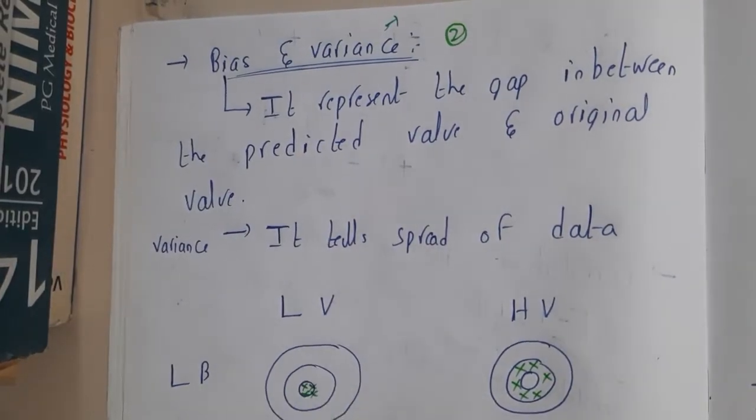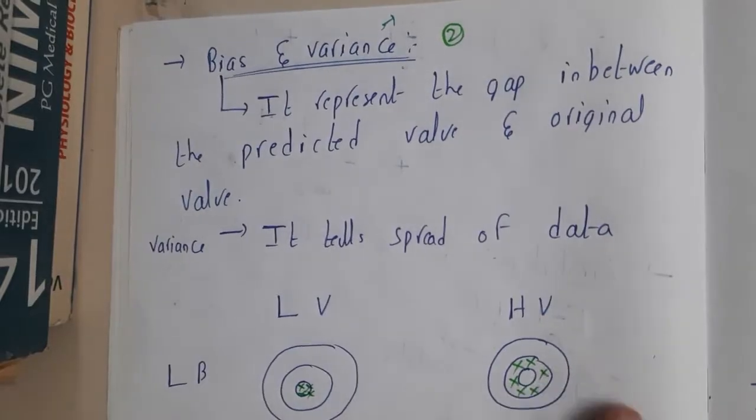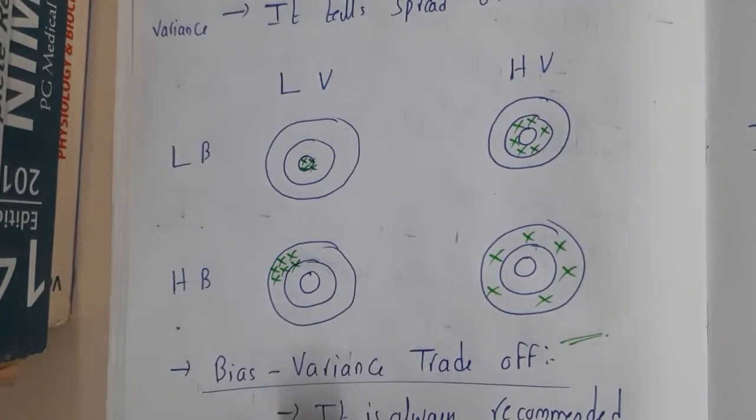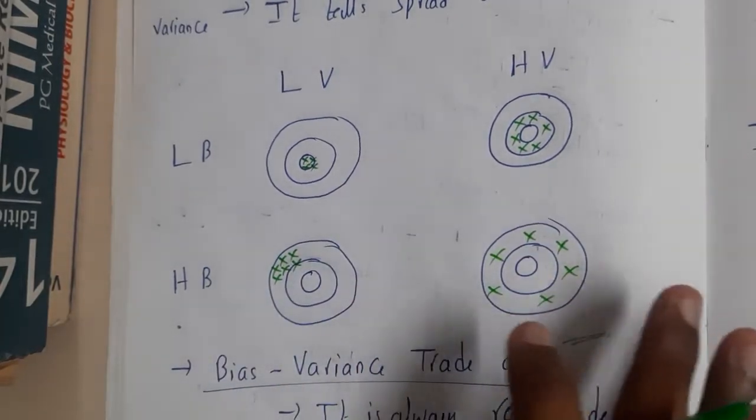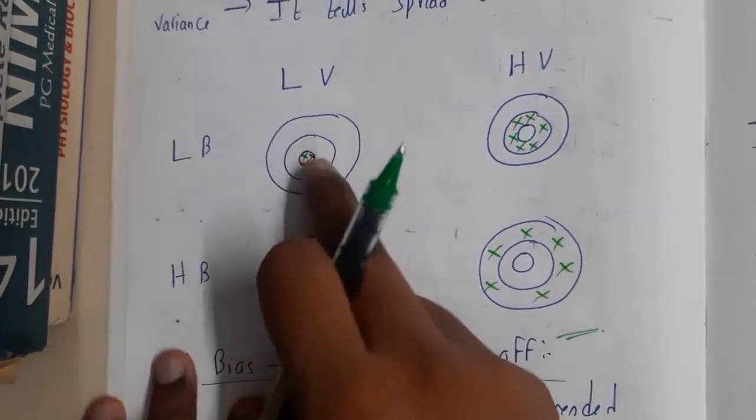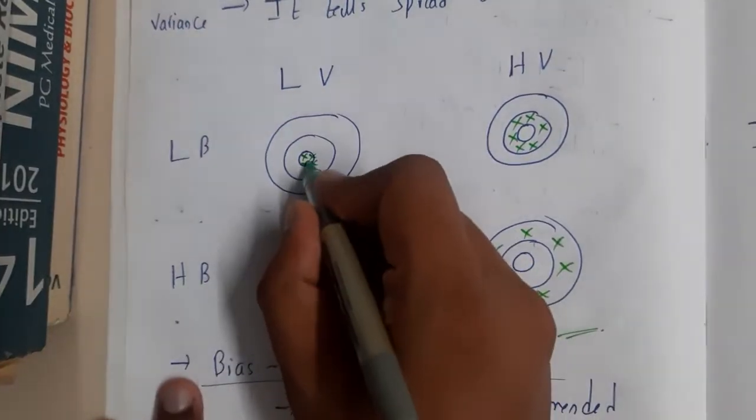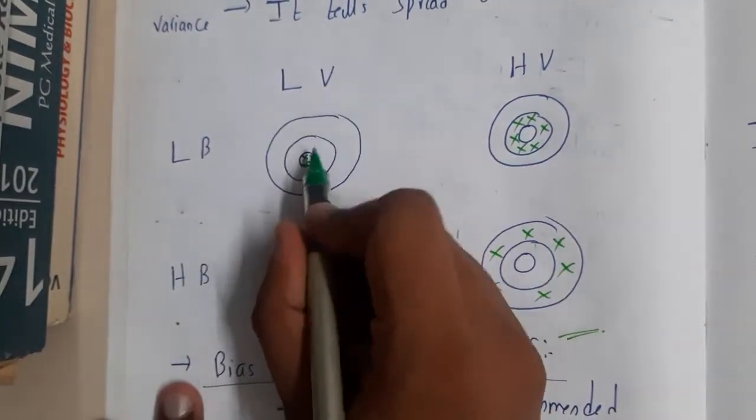Those are just the basic definitions. I'll explain the concept of variance and bias using these four charts. Assume this is a dartboard with a bullseye in the center. Our goal is to hit the bullseye.